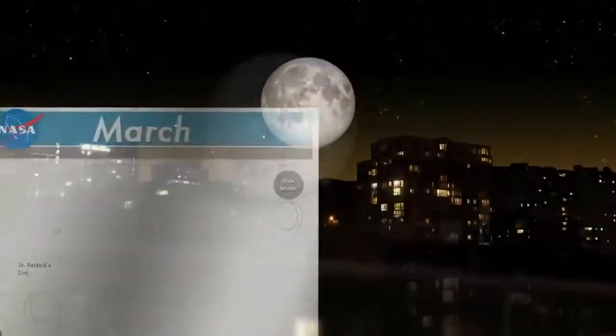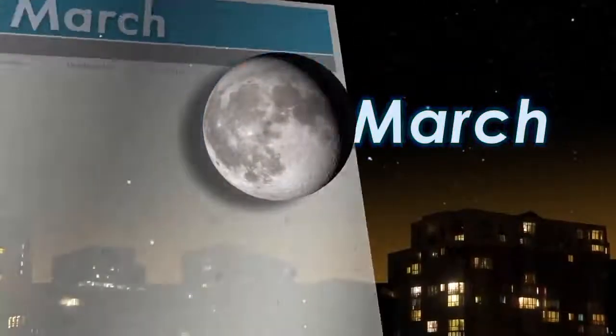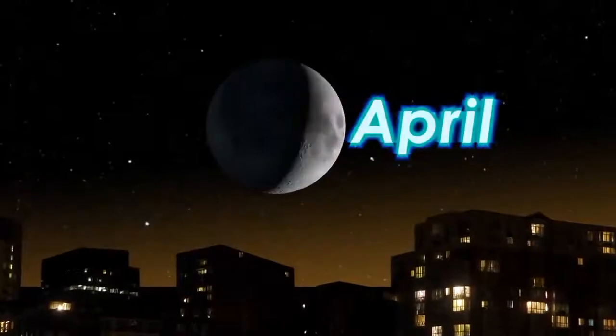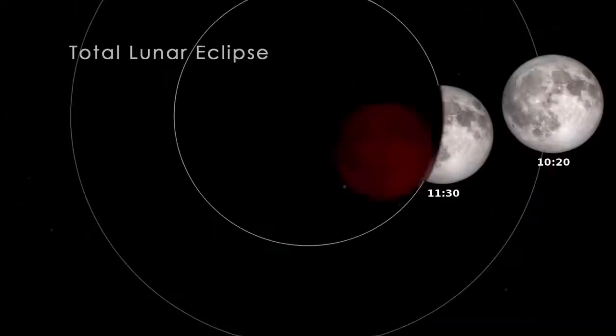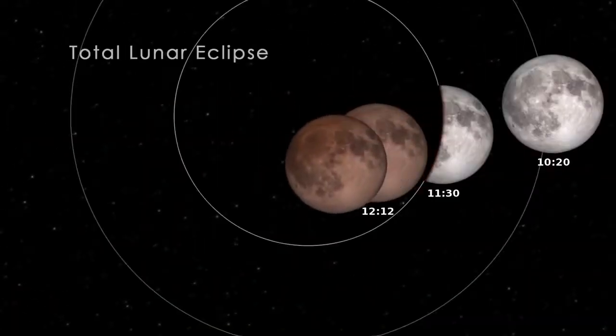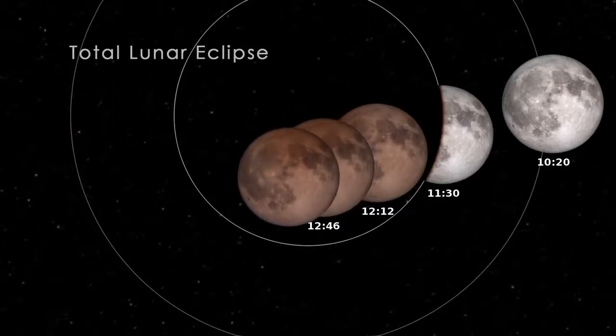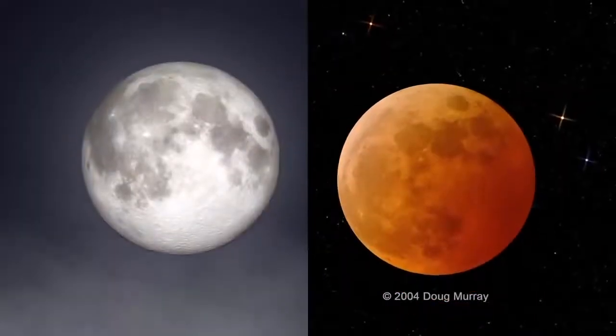Like clockwork, the full moon appears every month in our sky, a sight so familiar that we often take it for granted. But about twice a year, over the course of a few hours, the full moon sports a decidedly different look. What causes this sudden change?